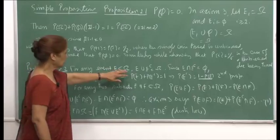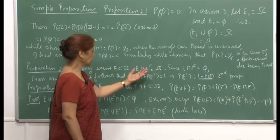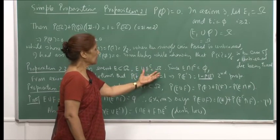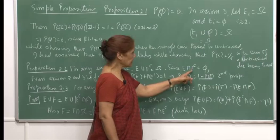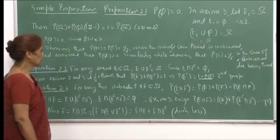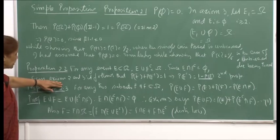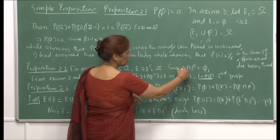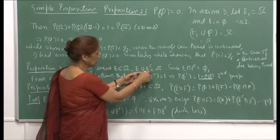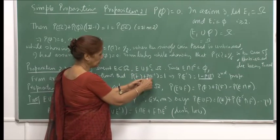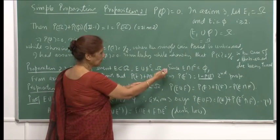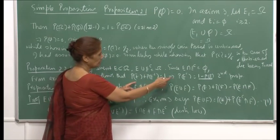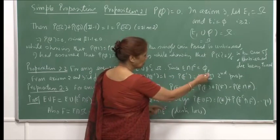For any event E, E ∪ Eᶜ = Ω, since every element of Ω is in E or in Eᶜ. Since E and Eᶜ are disjoint, they are mutually exclusive. From axioms 2 and 3, it follows that P(E) + P(Eᶜ) = 1, since P(E ∪ Eᶜ) = P(E) + P(Eᶜ) by axiom 3, and P(Ω) = 1 by axiom 2. Therefore, P(Eᶜ) = 1 − P(E).